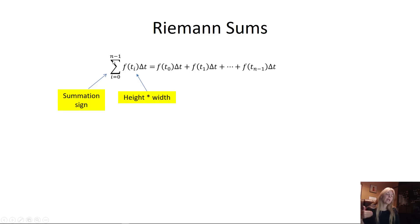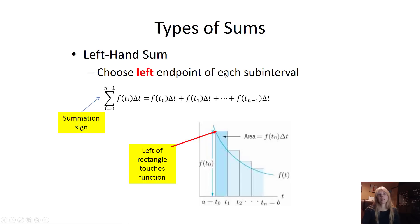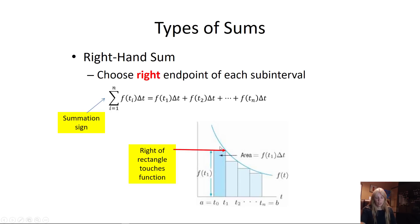The summation sign sigma means to add something up. I start from index zero and go to my number of subintervals minus one — that's how the table worked, you go one back, you don't include the last one. This piece is the height, which is the actual rate — my function, which is my derivative. And this is the width. All this is saying: take height times width for each rectangle and sum them all up.